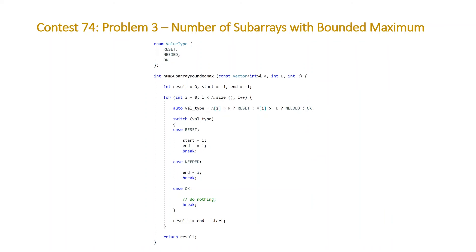Here we have a function num subarray bounded max that takes as two parameters, a vector of integers, which are the values of our array and two integers l and r, which set the bounds for our maximum element. At the top here, I have an enumerator defined to make it really clear what we're doing with our cases. I wouldn't recommend actually writing this during a contest for the purposes of speed, but here it's just for clarity's sake.